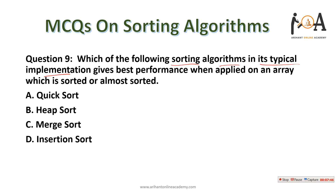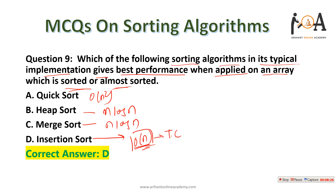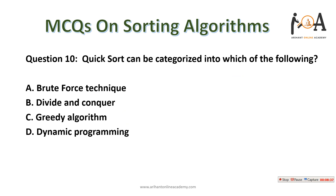The next question: which sorting algorithm in its typical implementation gives best performance when applied to an array that is sorted or almost sorted? Quick sort has O(n²) worst case, heap sort is O(n log n), and merge sort is O(n log n). But if our array is sorted or almost sorted, insertion sort takes only O(n) time. So option D — insertion sort — is the correct answer.